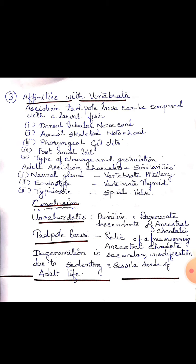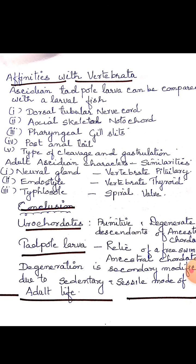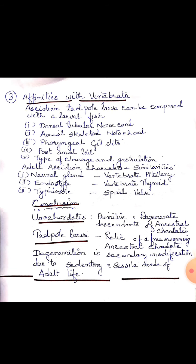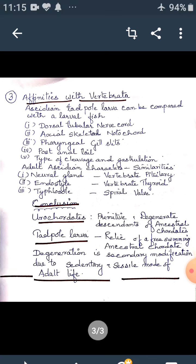In conclusion, it is obvious that urochordates are primitive and degenerate descendants of ancestral chordates. The tadpole larva represents a relic of the free-swimming ancestral chordate. The degeneration of the larval form is a secondary modification due to the sedentary and sessile mode of adult life. This topic is important and the concepts need to be learned carefully.